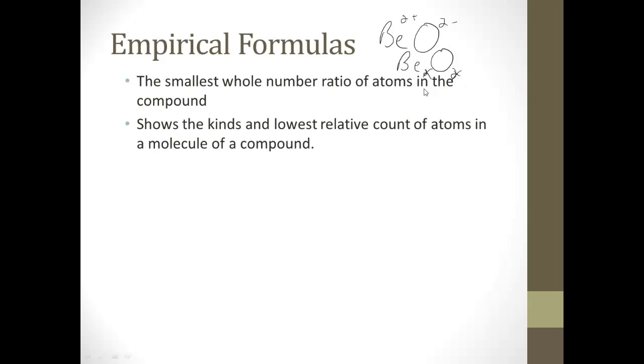One example would be hydrogen peroxide. Hydrogen peroxide has a ratio of a one-to-one ratio of hydrogen to oxygen, making the empirical formula HO. We're going to see in a little bit the actual molecular formula is different than this. But the empirical formula, the lowest common denominator kind of deal, is just a one-to-one.